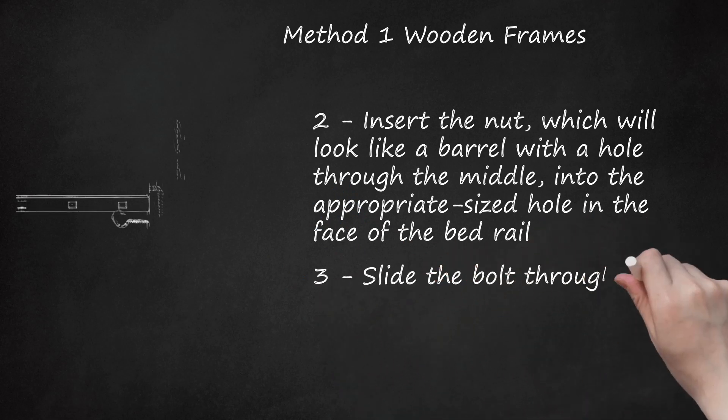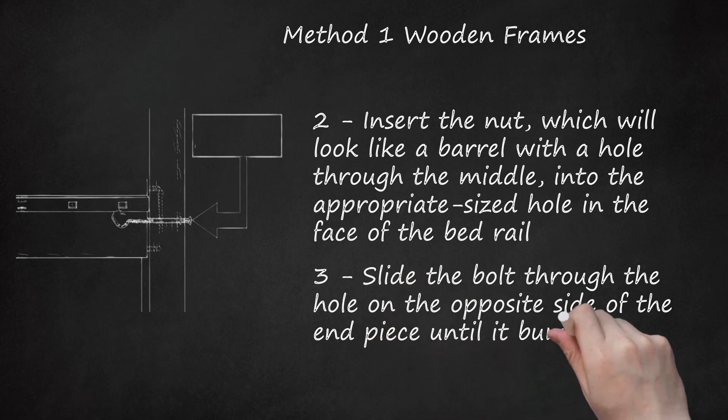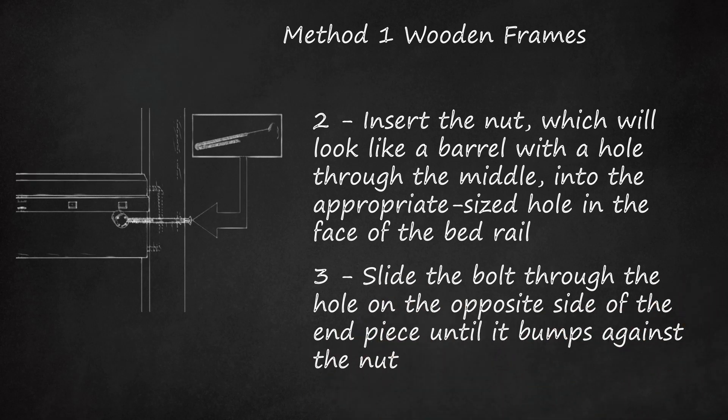Step 3: Slide the bolt through the hole on the opposite side of the end piece until it bumps against the nut. It will run through the hole in the end piece and into a hole in the end of the bed rail.